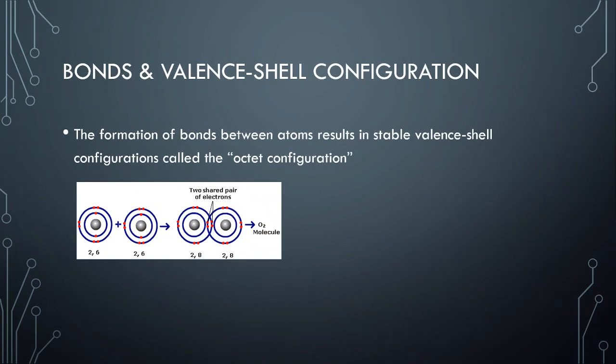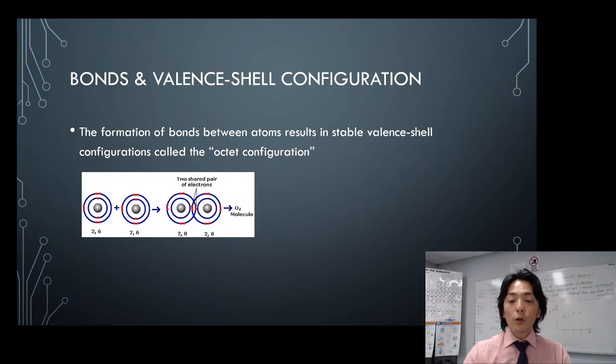What oxygen does is by sharing two electrons each, the electron configuration of 2,6 and 2,6 becomes 2,8 and 2,8. Two electrons are shared from each side of atoms. That's what occurs in covalent molecules.